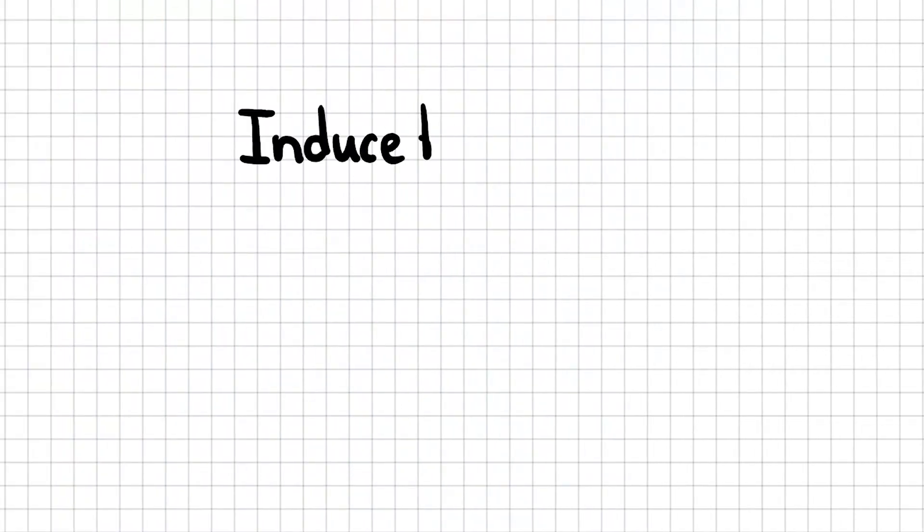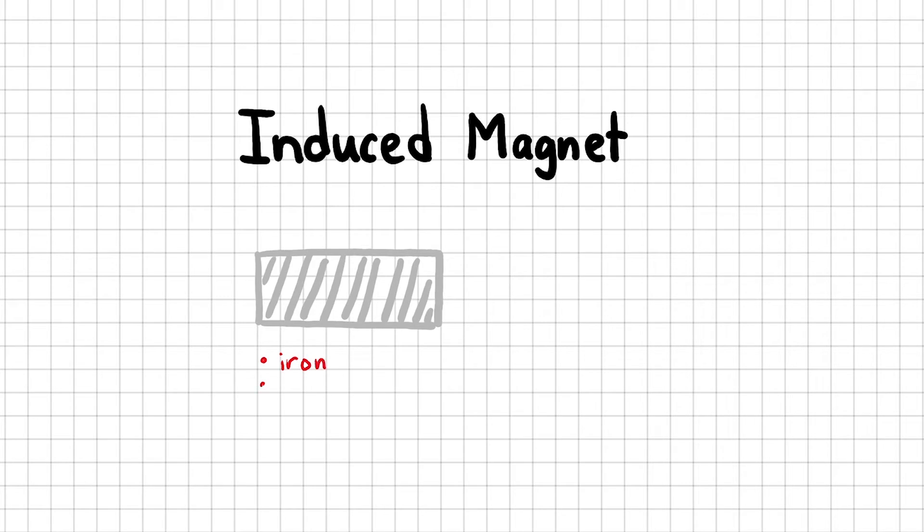Another type of magnet is known as induced magnets. They are made of iron, cobalt, or nickel. An induced magnet is a material that becomes a magnet only when it's placed in a magnetic field. And what is something that always has a magnetic field? A permanent magnet.